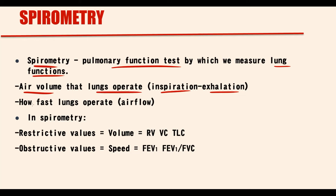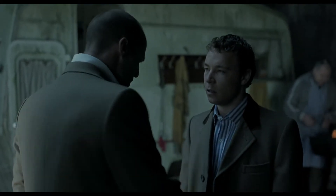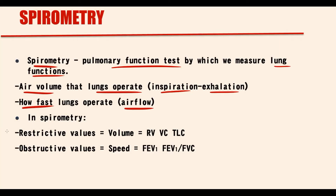But we're also interested in how fast lungs operate. So we're interested in the volume of air exchange and how fast this air exchange occurs. To measure these two functions we have restrictive and obstructive values. Restrictive values measure just the volume of air that lungs operate, while obstructive values tell us about the speed of air exchange.